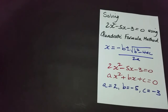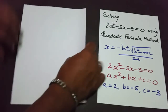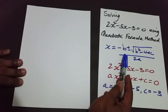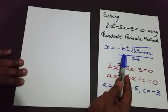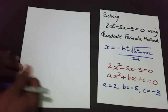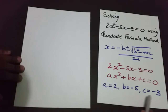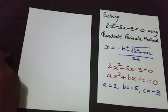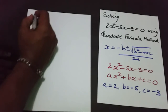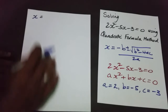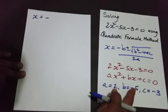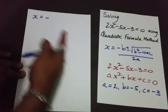So remember what the quadratic formula is, and what we're going to do now is plug in these values and just work it out. The value of x is equal to the negative of b — and b is negative 5. Now remember, the negative belongs to the formula and the value of b is negative 5.